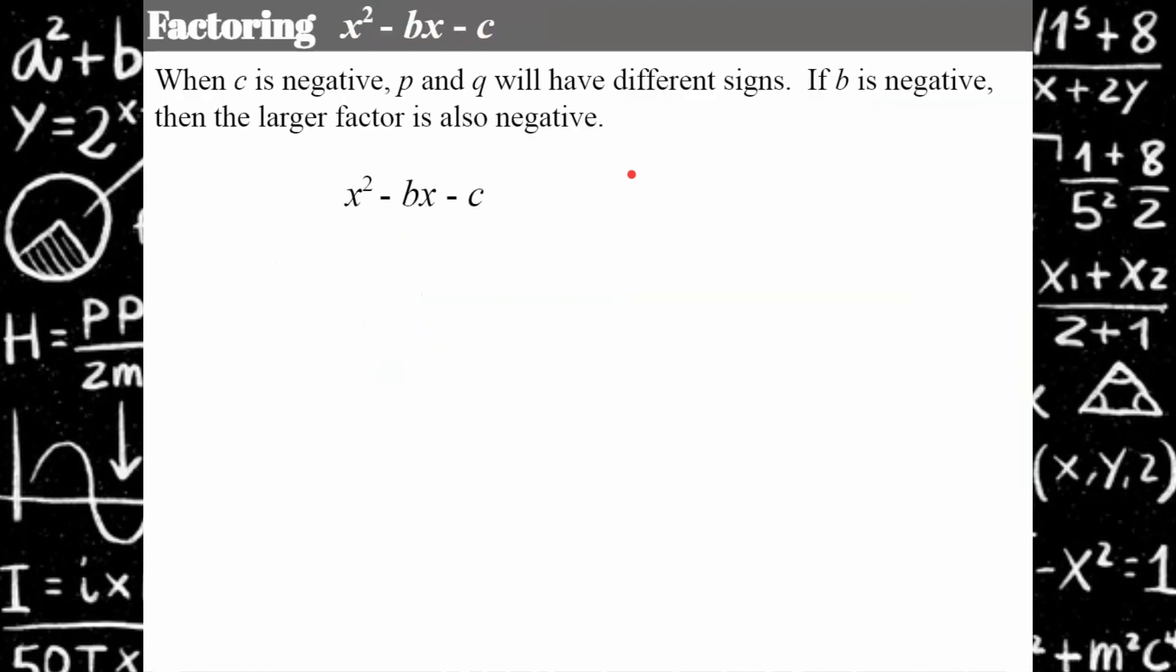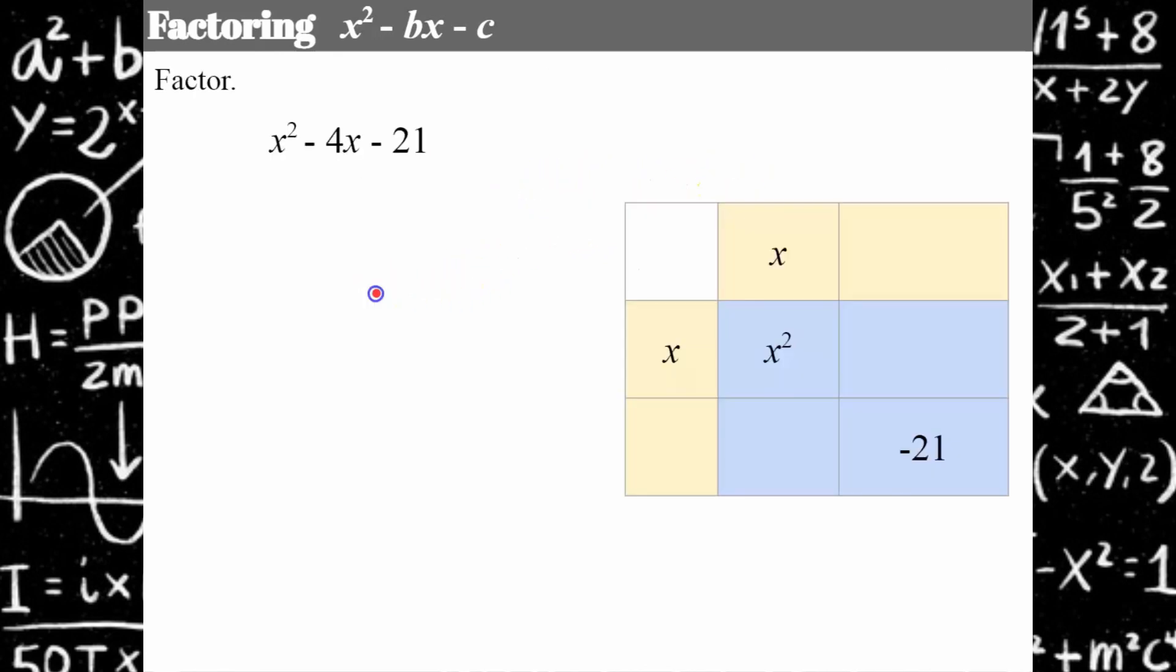I have one more example for you now. What happens when b is negative and c is negative? So now we're going to have our larger factor is going to be negative. We're going to have one binomial positive and one negative. Here's an example: x squared minus 4x minus 21. I'm going to write all my factor pairs for negative 21: 1 times negative 21, noticing that I put the negative with the larger number because I know for this to turn out to be negative, my larger factor needs to be negative and my smaller needs to be positive.